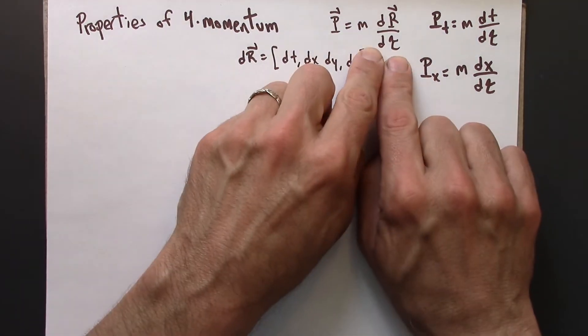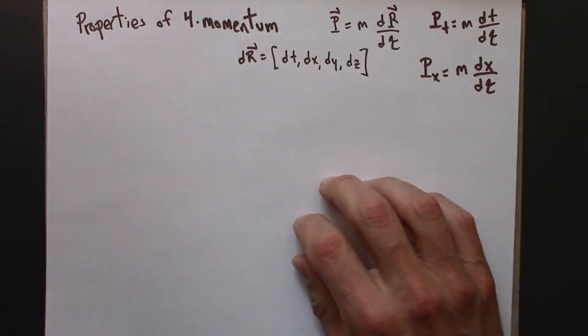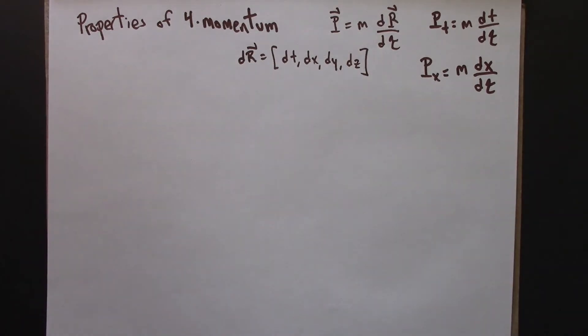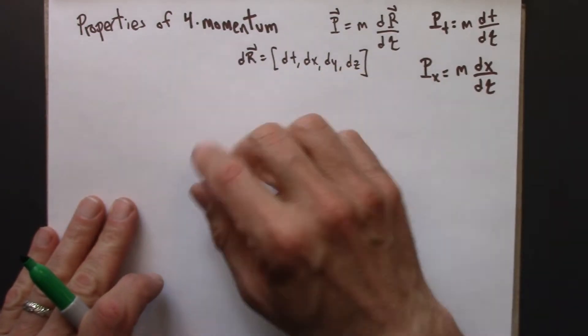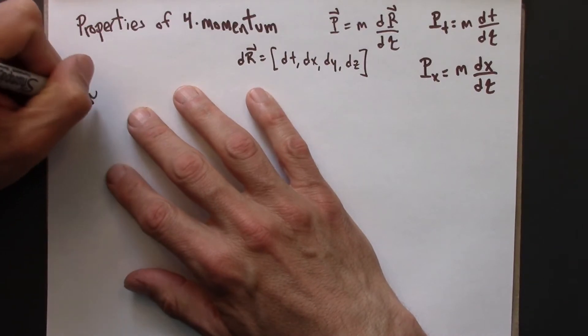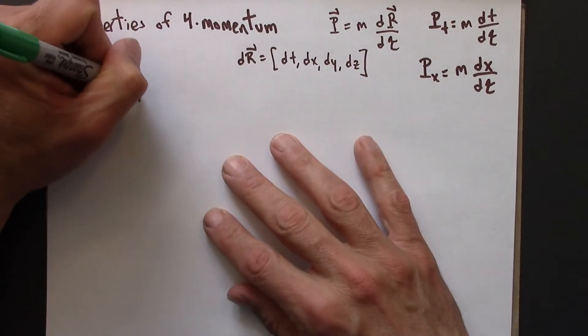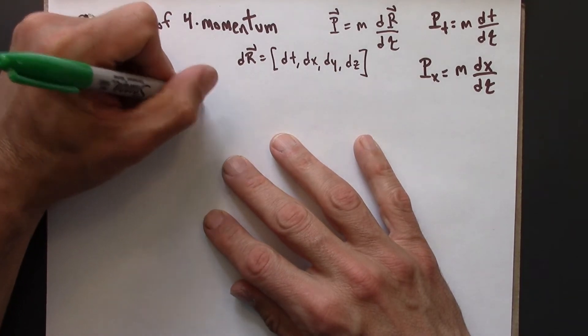So tau, proper time, is frame-independent. The question that we're going to think about now is, how does P depend on the reference frame? I've argued that it's frame-dependent, but how is it frame-dependent?